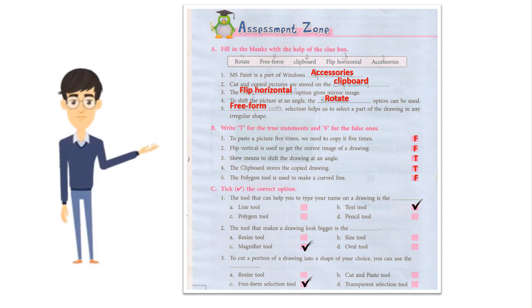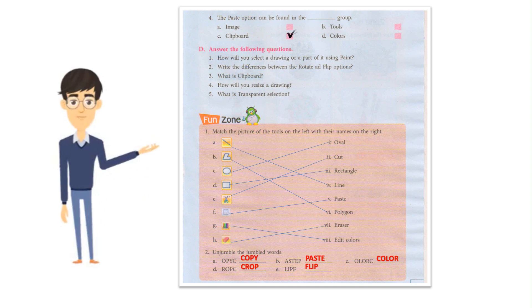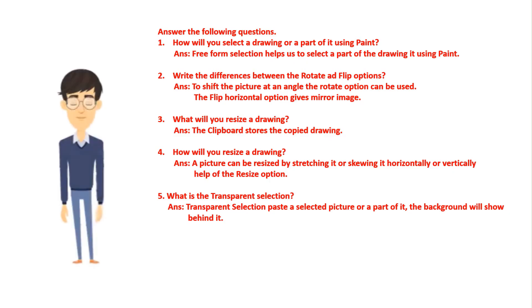A. Fill in the blanks with the help of the clue box. B. Write T for the true statements and F for the false ones. C. Tick the correct option. D. Answer the following questions.